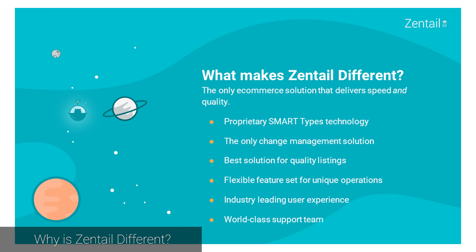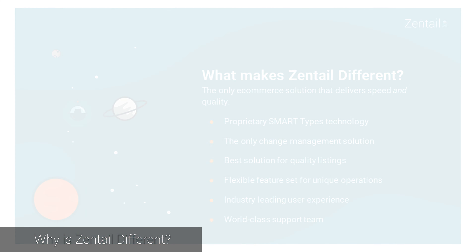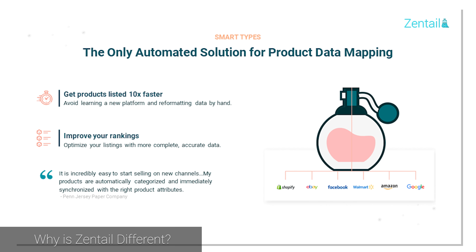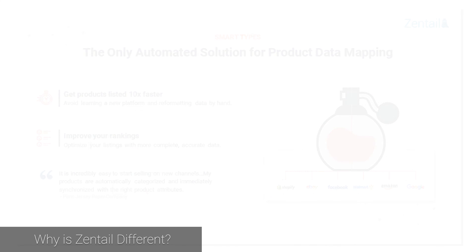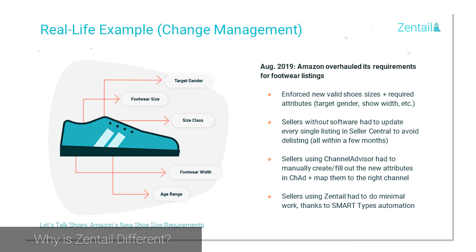Why are we different? You're human — we design the interface and logic of Zentail specifically for you. We strip away extraneous or irrelevant attribute fields from your view to leave you with only the elements you need to access and change. Zentail is the only platform built for an accelerating world, complete with AI-powered tools that do the heavy lifting for you. Any platform can provide the bare bones needed to list on multiple platforms, but we focus on quality data so that you can thrive on any channel you integrate into.